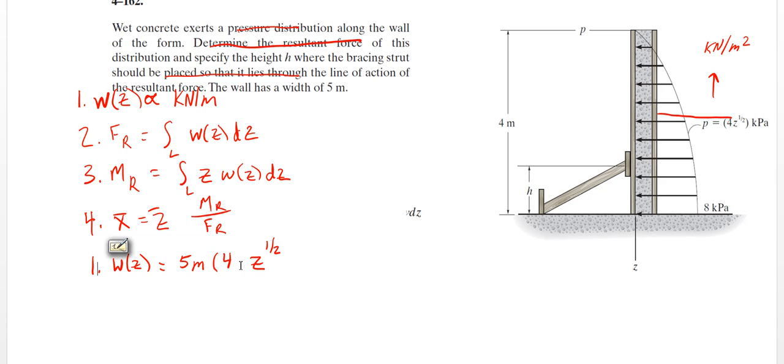So we've got our 4z to the 1 half. And we're going to multiply that by 5, so we're going to get 20z, and all the units there are kilonewtons per meter squared, so our squared is going to go away. So we're going to get 20z to the 1 half kilonewtons per meter. So that's our loading profile there.